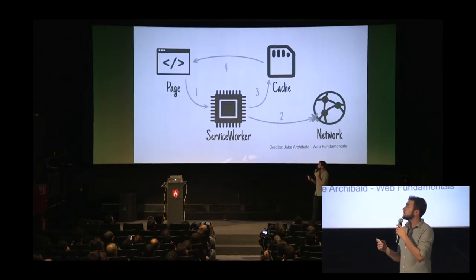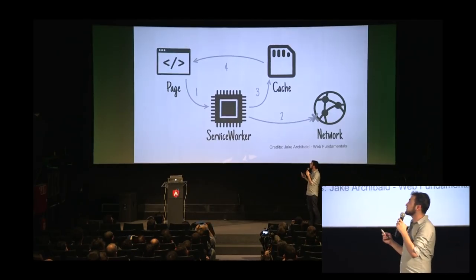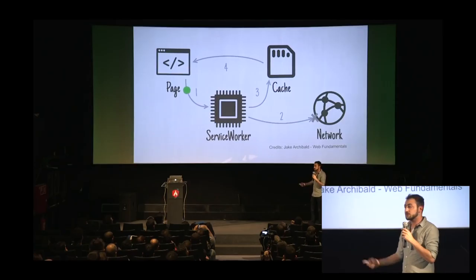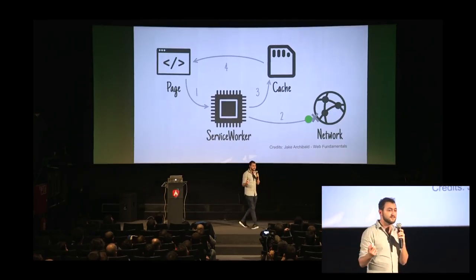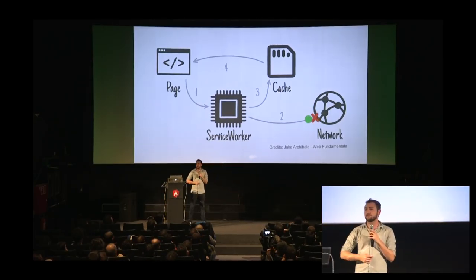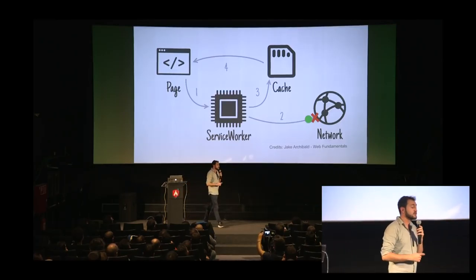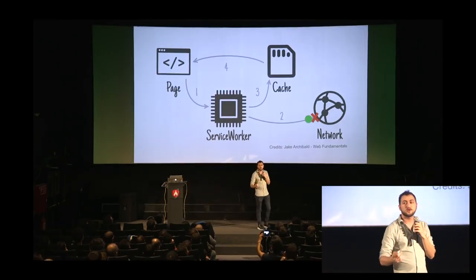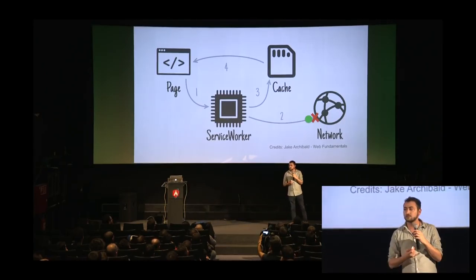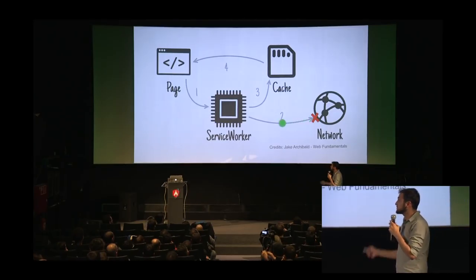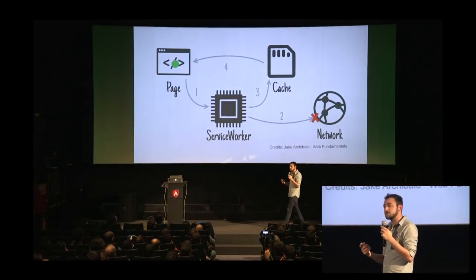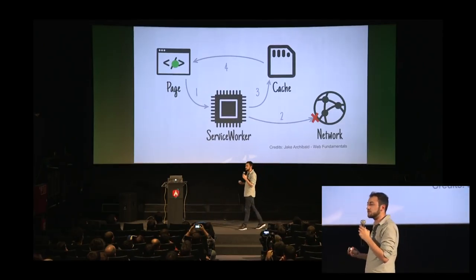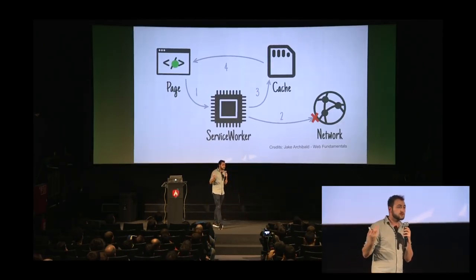There's also a network-first strategy. The page request gets intercepted by the Service Worker, which forwards it to the network. If the network fails — and it fails more often than we think, whether in the subway or with bad connectivity — the Service Worker forwards the request to the cache instead, returning the cached data to the page. This is useful if you want the freshest API data but can fall back to cache if offline.